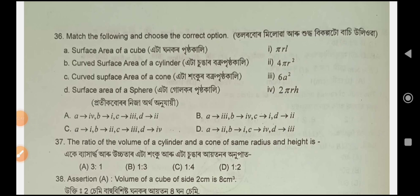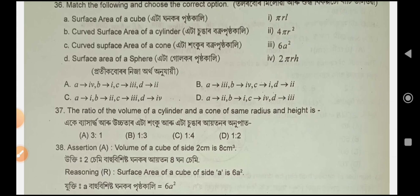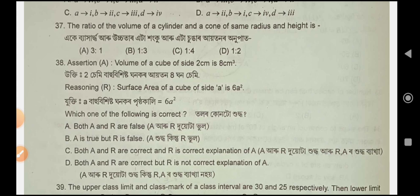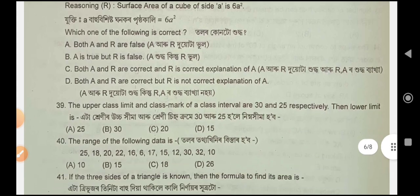Question number 36: option B. Question number 37: option B. What is the ratio of the volume of a cylinder and a cone of the same radius and height? The answer is option A. Question number 38: option D. Question 39: option C.